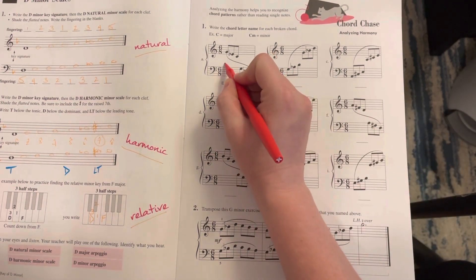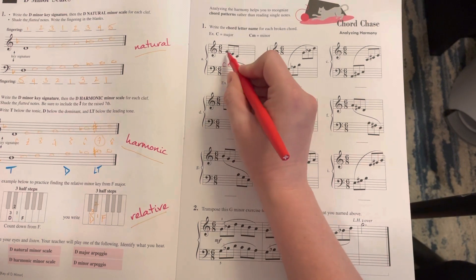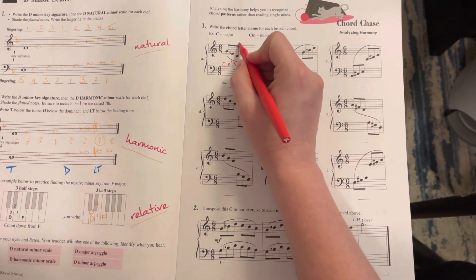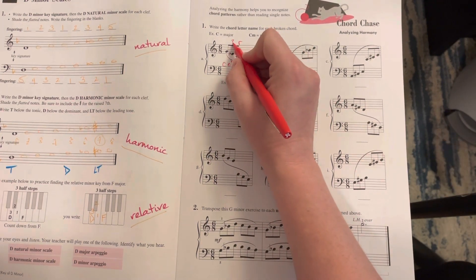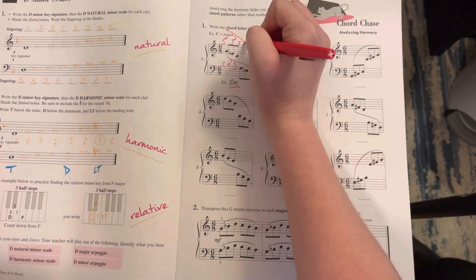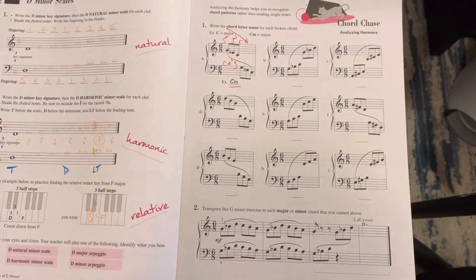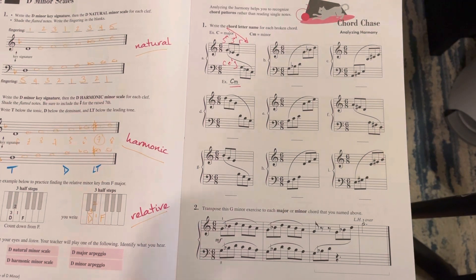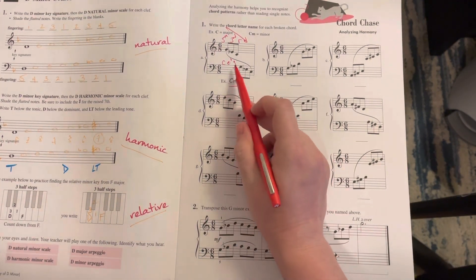Because it is C, E flat, and G. Even though it starts on G, C is the root, E flat is the third, and G is the fifth. So this is a descending chord. Not all the time are they going to be stacked neatly, so you have to make sure that you can stack all of them a third on a third.